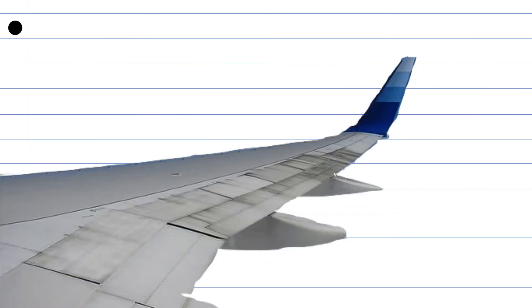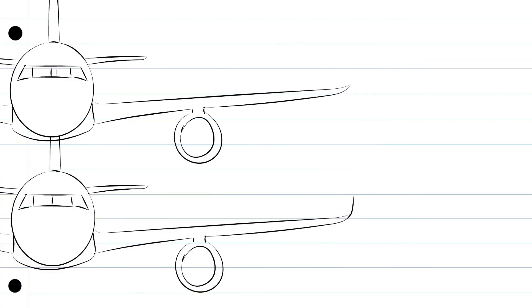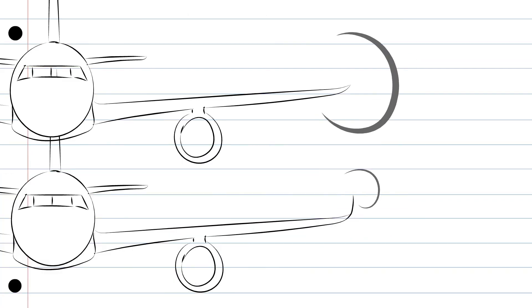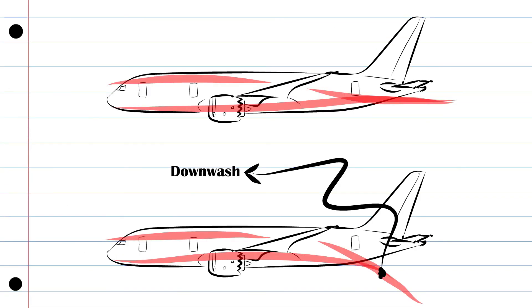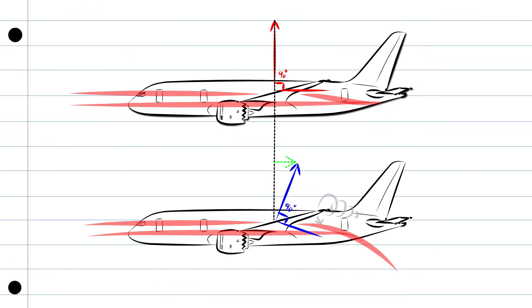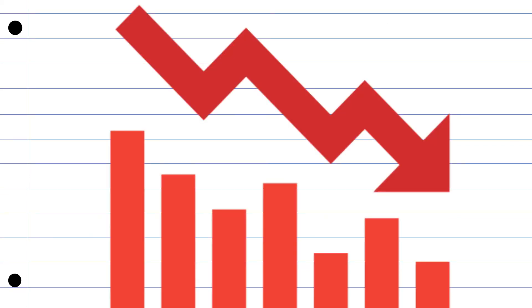The other way to reduce induced drag is winglets. What they do is redirect the relative airflow, and that causes a reduction in the wing tip vortices — so basically they make the wing tip vortices smaller. Smaller wing tip vortices means less downwash, and less downwash means a smaller incline in the lift component, and a smaller incline in the lift component means less induced drag.